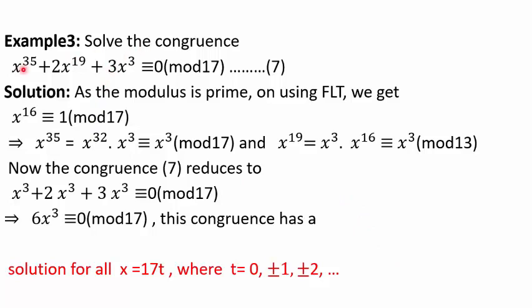Example 3: solve x³⁵ + 2x¹⁹ + 3x³ ≡ 0 (mod 17). The modulus is prime, so FLT gives x¹⁶ ≡ 1 (mod 17). The term x³⁵ ≡ x³ (mod 17) and x¹⁹ ≡ x³ (mod 17). Substituting, the congruence becomes x³ + 2x³ + 3x³ = 6x³ ≡ 0 (mod 17). The solution is x = 17t, meaning all multiples of 17 satisfy this congruence.